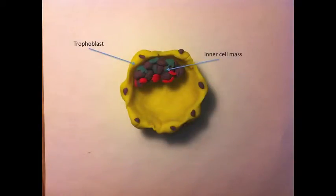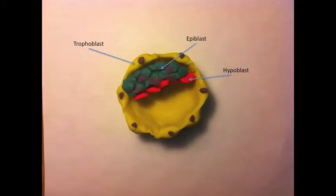The inner cell mass uses delamination movements to separate into two distinct sheets of cells. One is the epiblast and the other is the hypoblast.